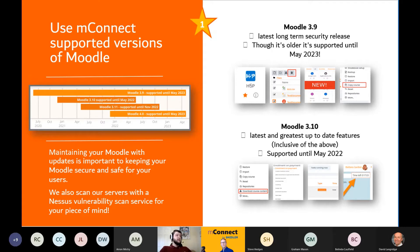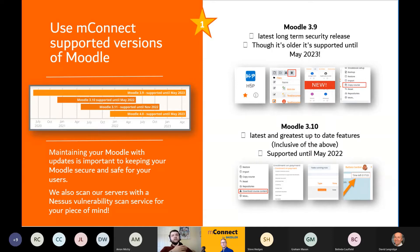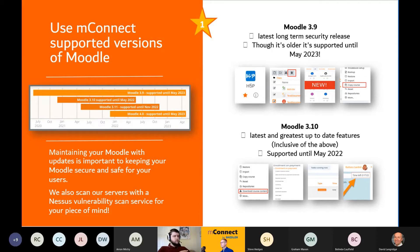Moodle 3.9 is the latest long-term security release — it will be supported until May 2023, whereas Moodle 3.10 will only be supported until May 2022. Security patches, bug fixes, and exploit fixes are all covered until those dates. So if you're looking to stay on a version for a long time rather than switching every year, a long-term security release is definitely the one for you. Moodle 3.10 isn't supported as long but does have more features, including everything in 3.9 plus additional extras visible in the pictures shown. Full details can be found in Moodle's release notes.